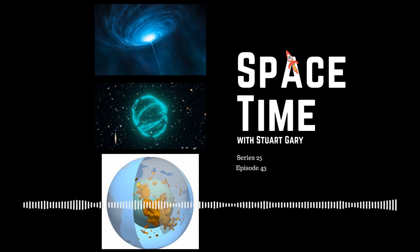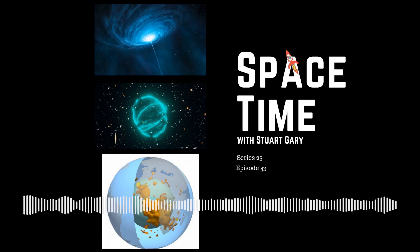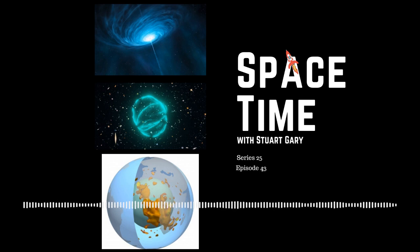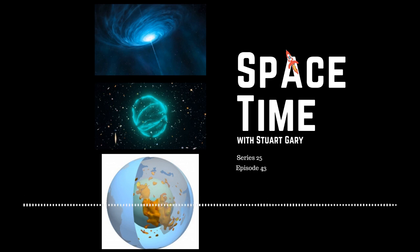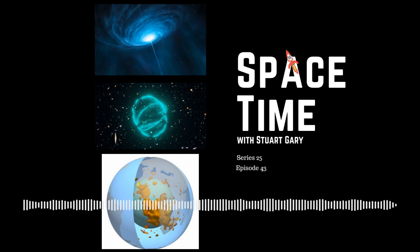Welcome to Space Time with Stuart Gary. Hot on the heels of last week's announcement of the most distant star ever seen, astronomers have just discovered a galaxy 13.5 billion light-years away. That makes this the most distant object ever seen. The findings have literally changed science's understanding of the early universe and its evolution. This galaxy, which has been named HD1, was already formed when the universe was just 300 million years old. And that suggests this extends the epoch of reionization, when the first stars began to shine and end the cosmic dark ages, further back by at least 100 million years.